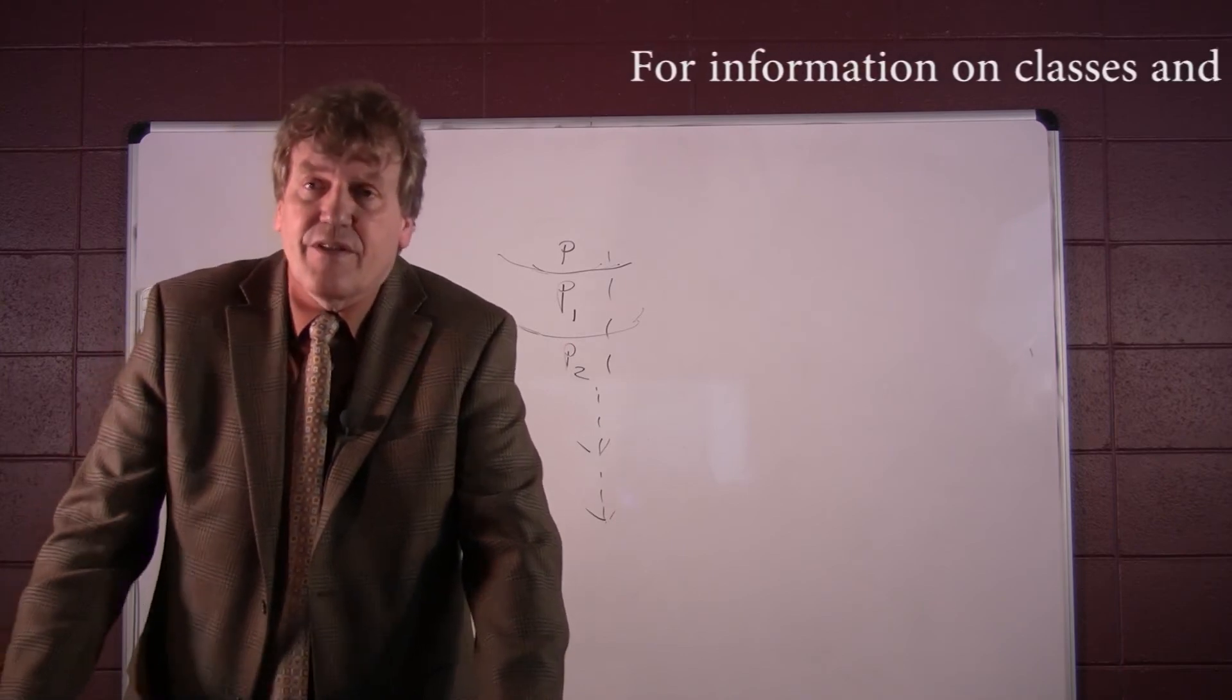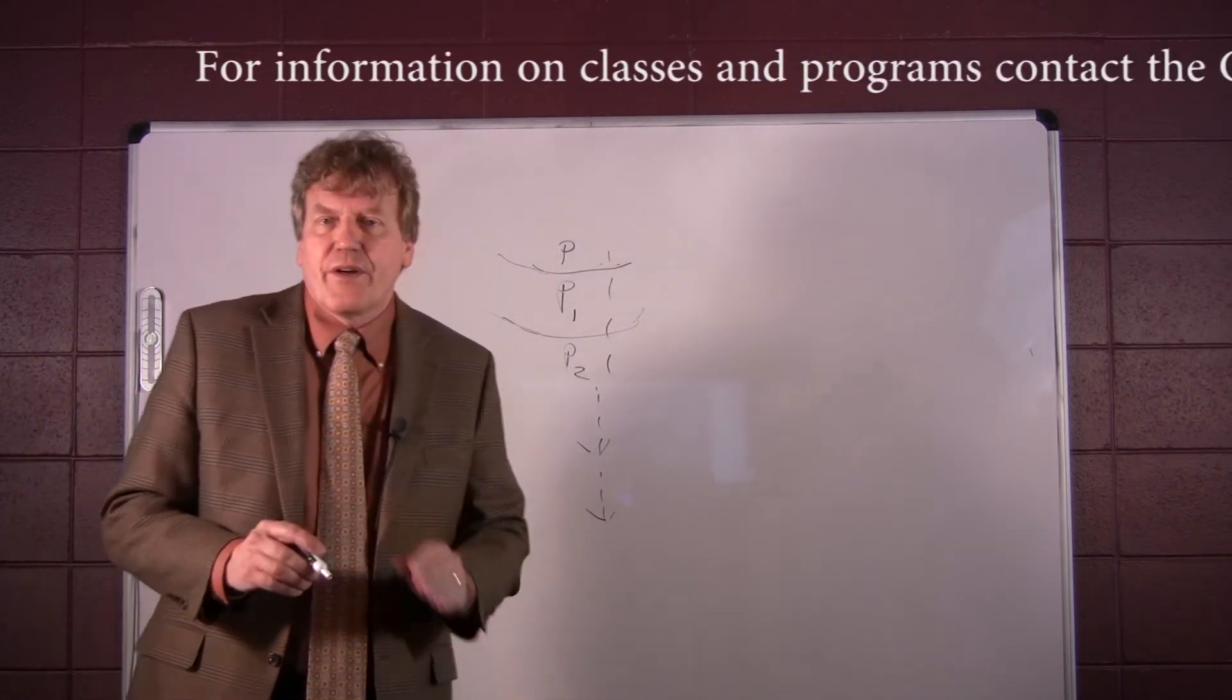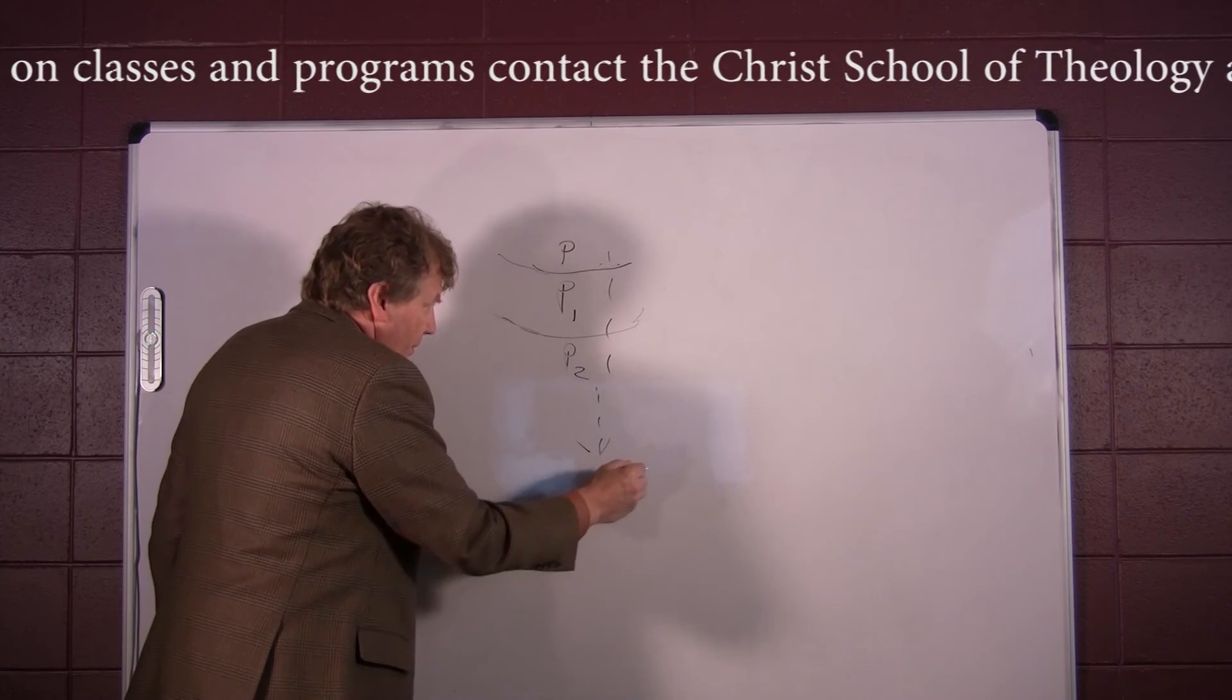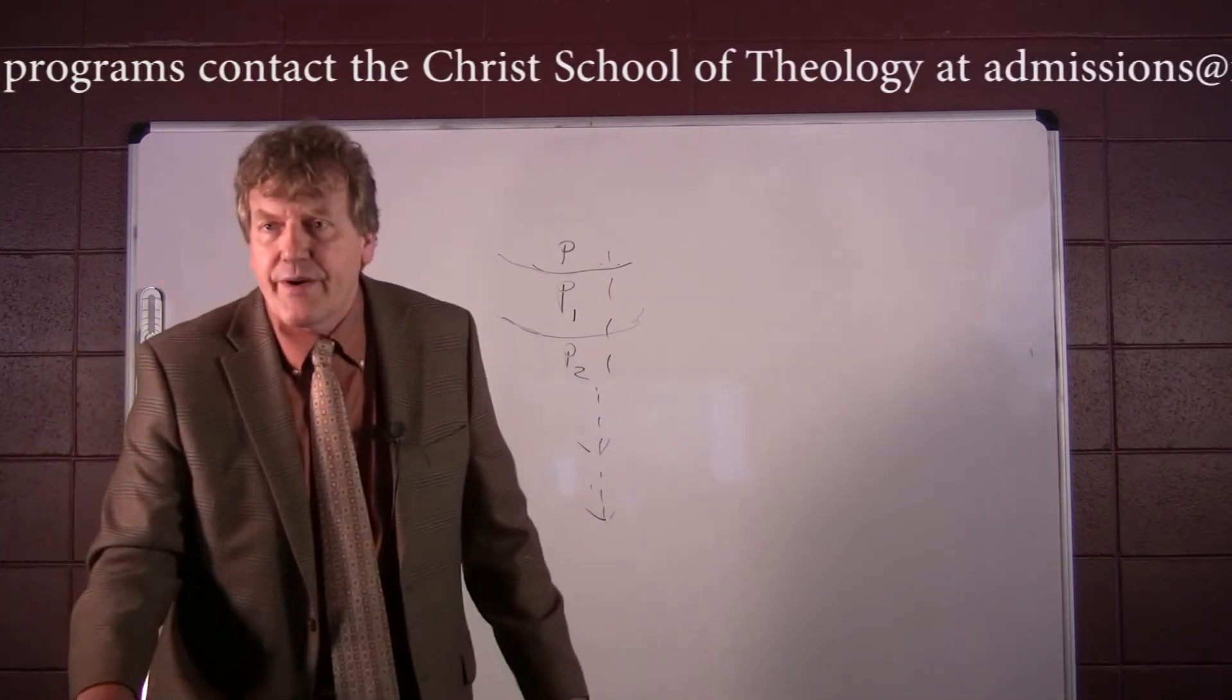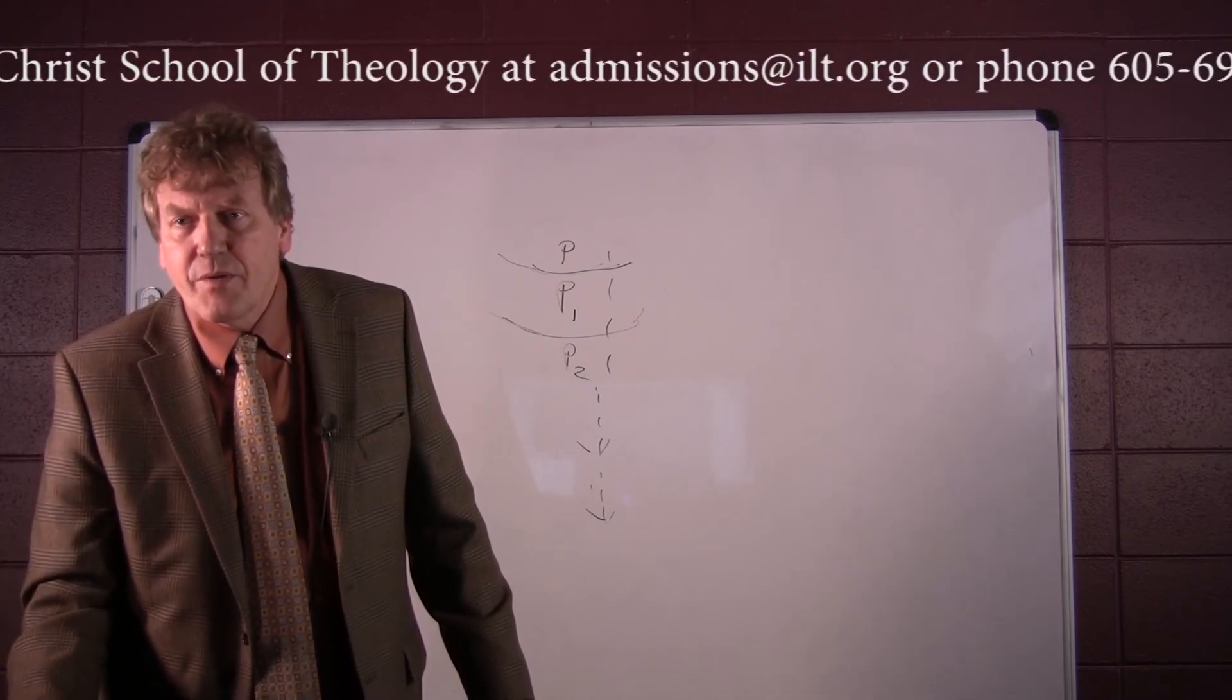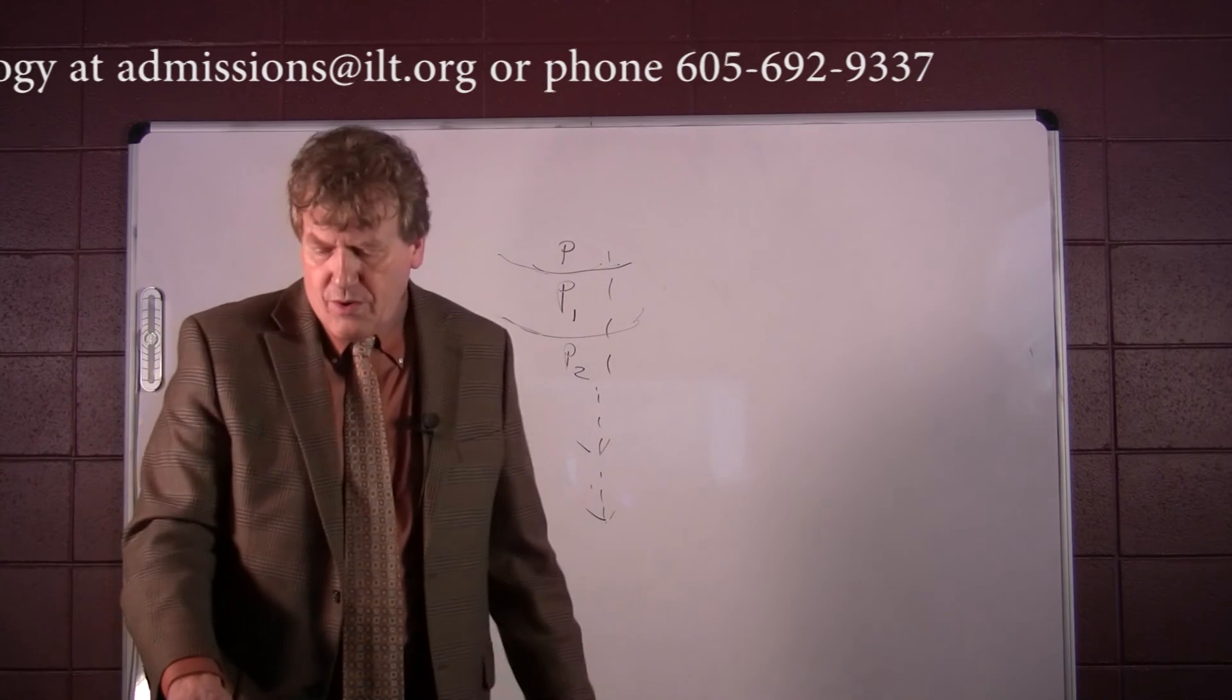A nature that possesses independent efficient causal power is absolutely first. Therefore, it is possible that there be an absolutely first efficient causal power. So what he's trying to argue here is that it is possible that there is a first thing here in this series of efficient ordered causes.